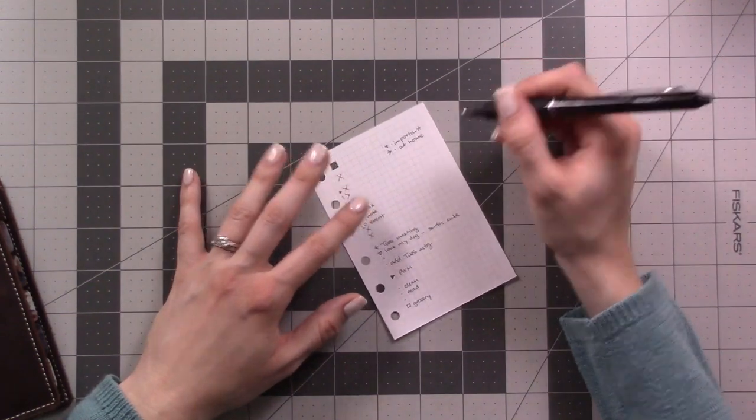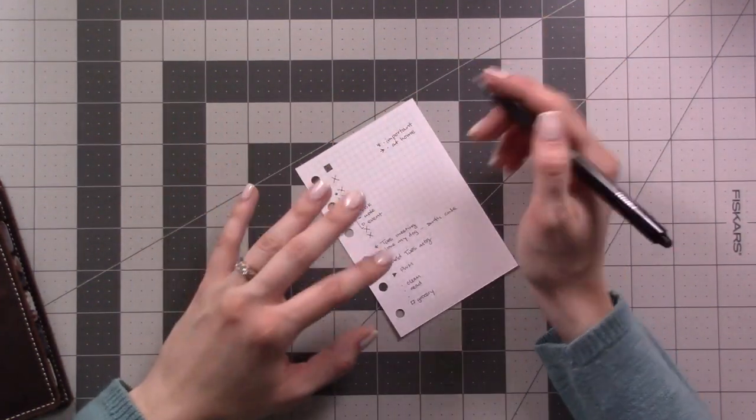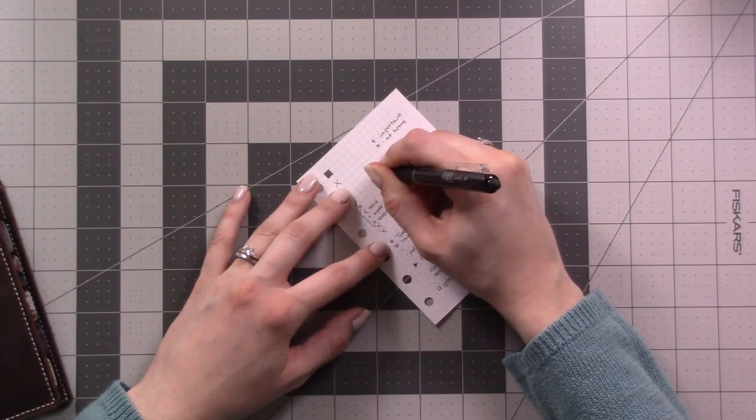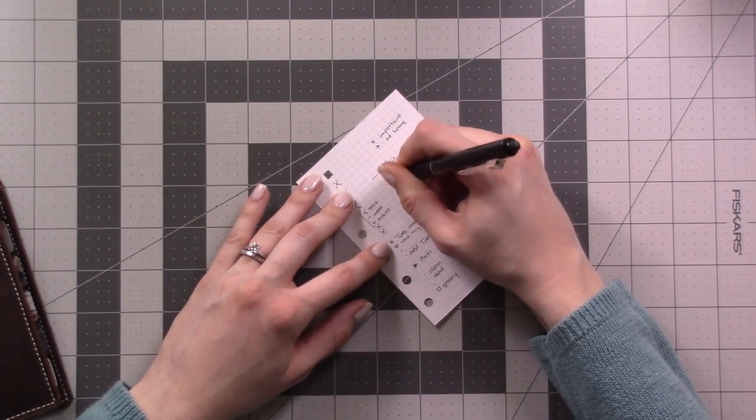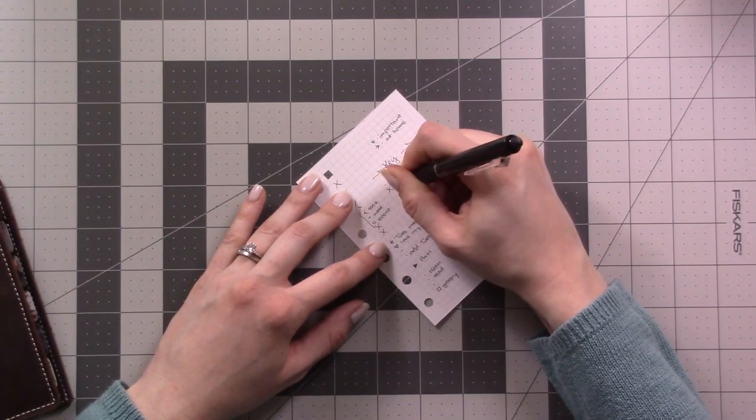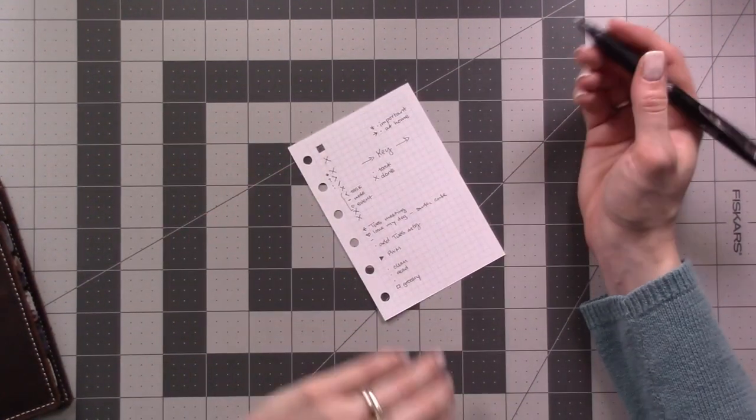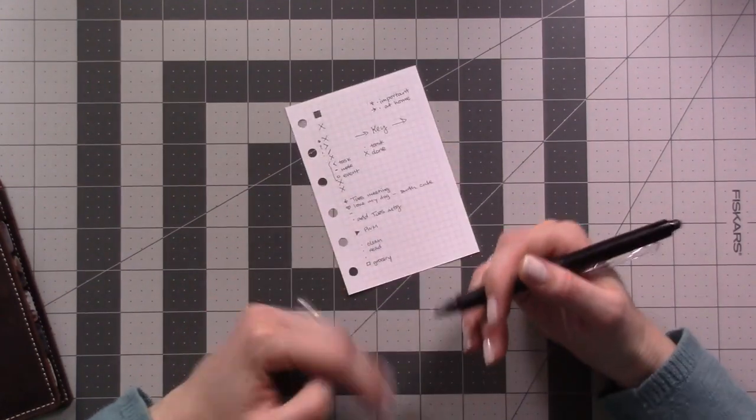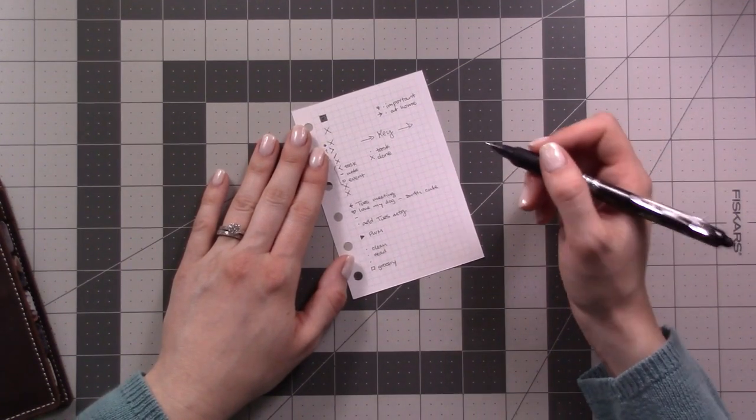I see a lot of people in their bullet journal flip throughs - and no offense to any of them, these are gorgeous pages - but they'll have a key at the front and it's decorated and they're like 'okay this means a task.' This is useful for when you're showing somebody else, like I'm showing you, but I don't have any of this written down in my bullet journal for reference for myself. I firmly believe that if you have to write down your key in order to remember it, it is too complicated to use.